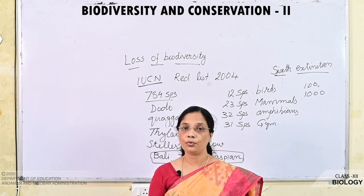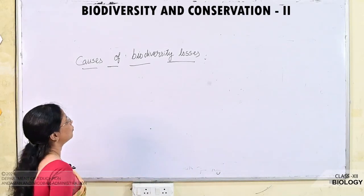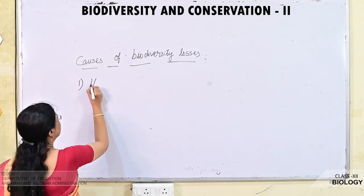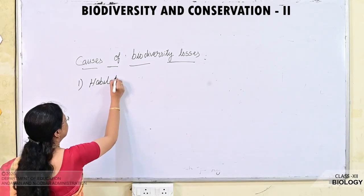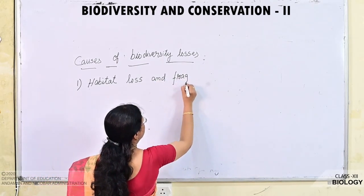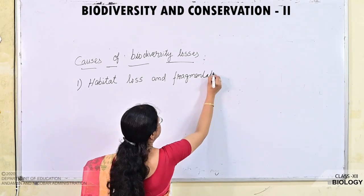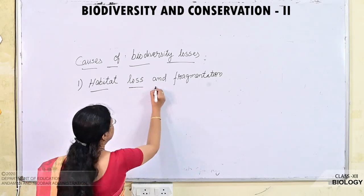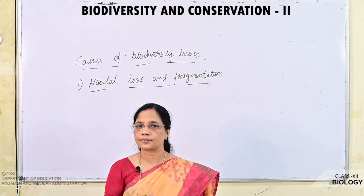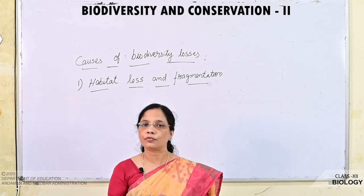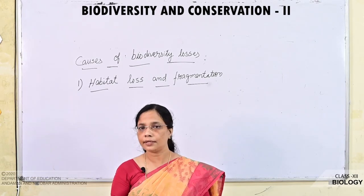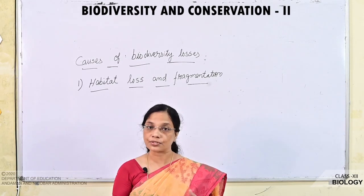Now we will see the causes of biodiversity losses. The first cause is habitat loss and fragmentation. Large areas of forest are broken into small pieces by human activity. In this process, many plant and animal species are lost or go extinct from this earth.